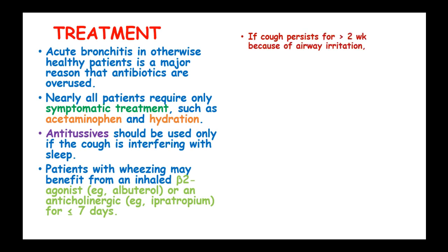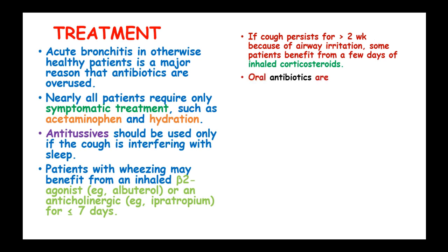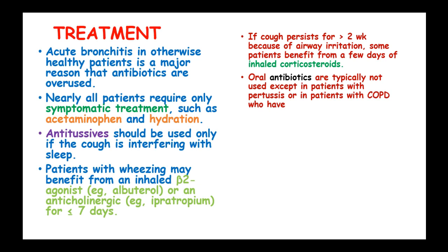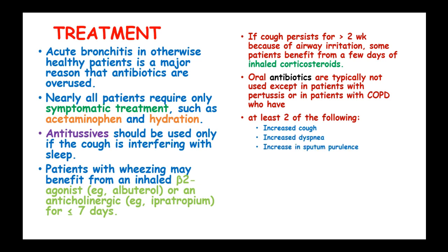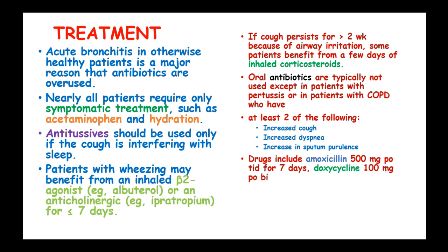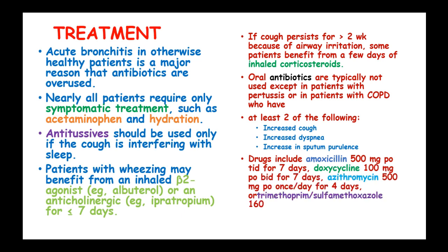If cough persists for more than 2 weeks due to airway irritation, some patients benefit from a few days of inhaled corticosteroids. Antibiotics are typically not used except in patients with pertussis or in patients with COPD who have at least two of the following signs: increased cough, increased dyspnea, and increased sputum production. Drugs include amoxicillin 500mg orally for 7 days, doxycycline, and azithromycin, together with trimethoprim-sulfamethoxazole.